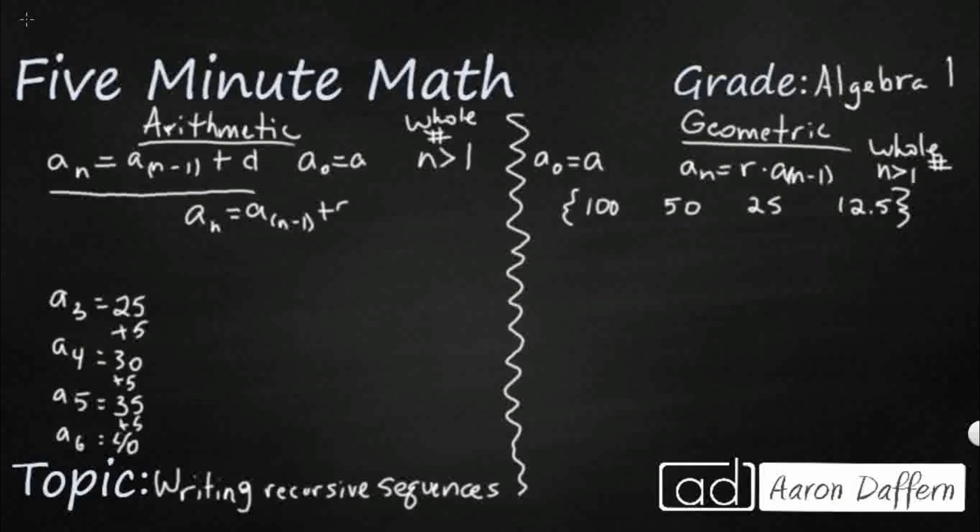Now the only difference is a₀, we need to find that. So we could just go backwards here and say that's 20. a₁ is going to be 15, so it starts at 10. So we could write it this way. a₀ is the one that kind of breaks the rule, so you have to give that one. That's one way that we could write this. Just find that pattern. That difference, that's what that d stands for, is the difference, it's a plus 5.